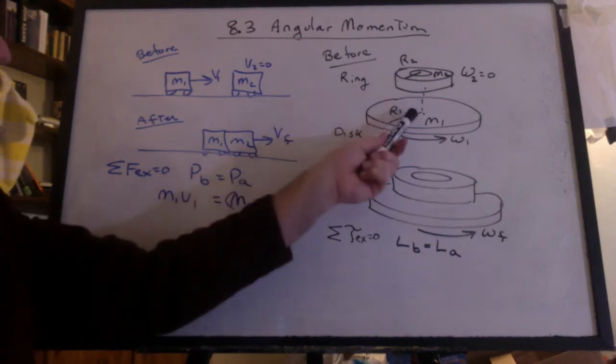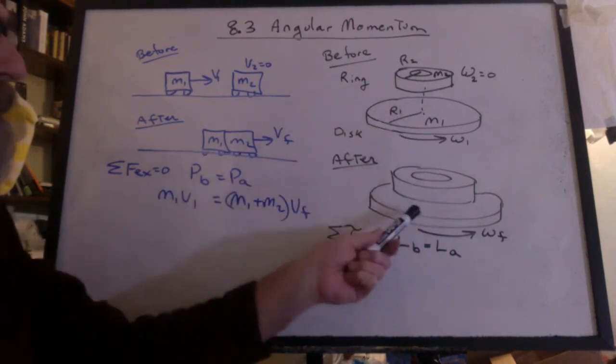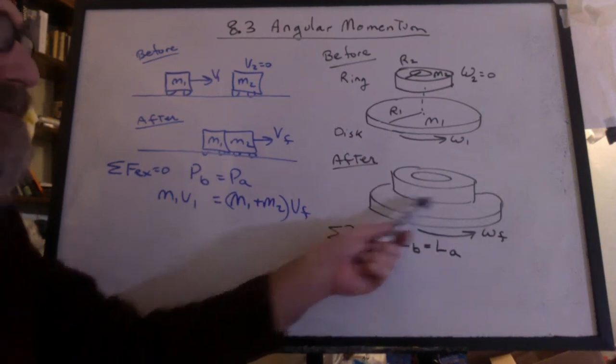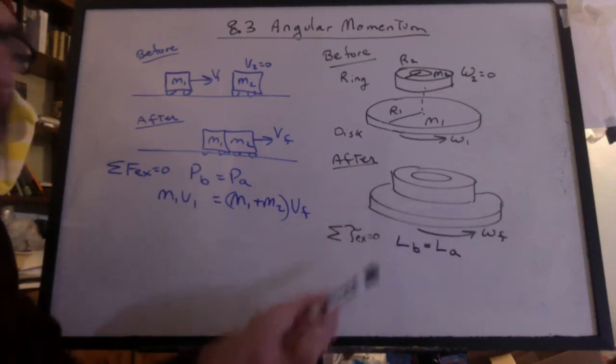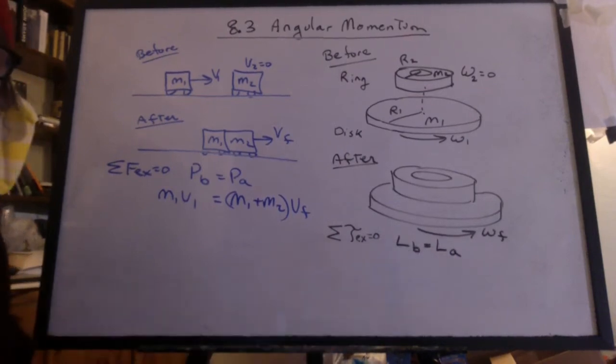When this ring lands on the disk, the ring is going to speed up and the disk is going to slow down. There's an internal torque that made that happen. That's how the momentum gets transferred. And the sum of the momentum stays the same on both sides.